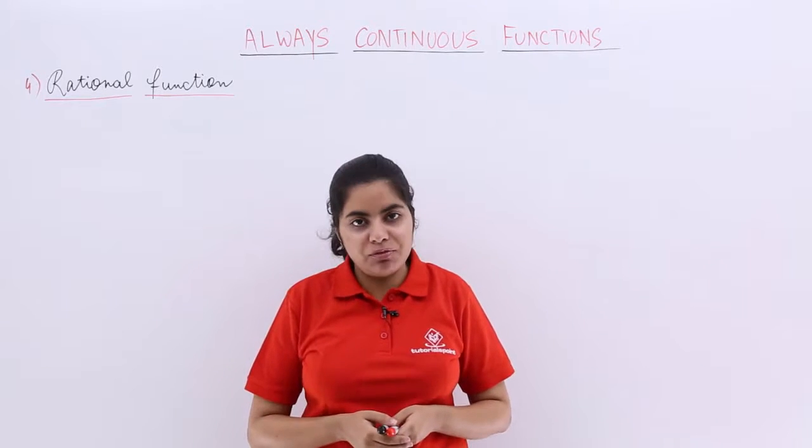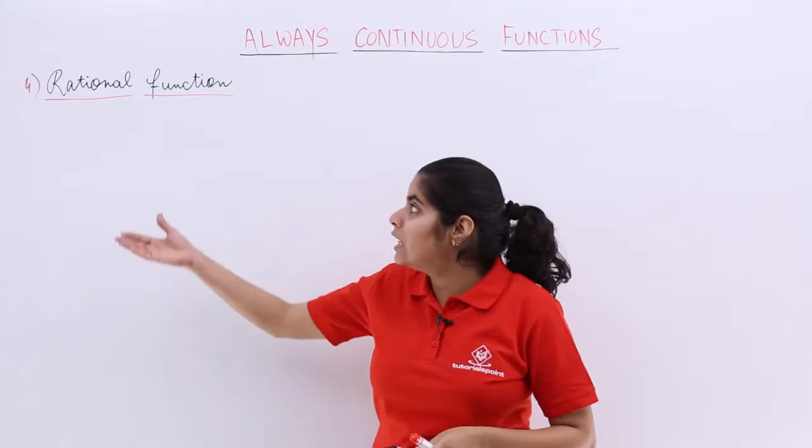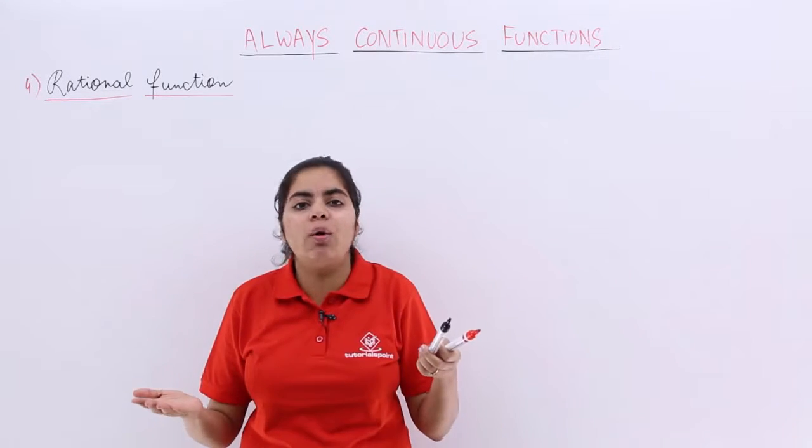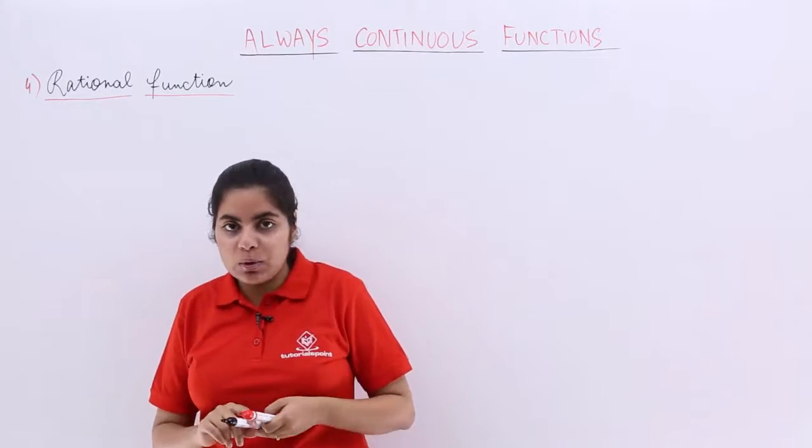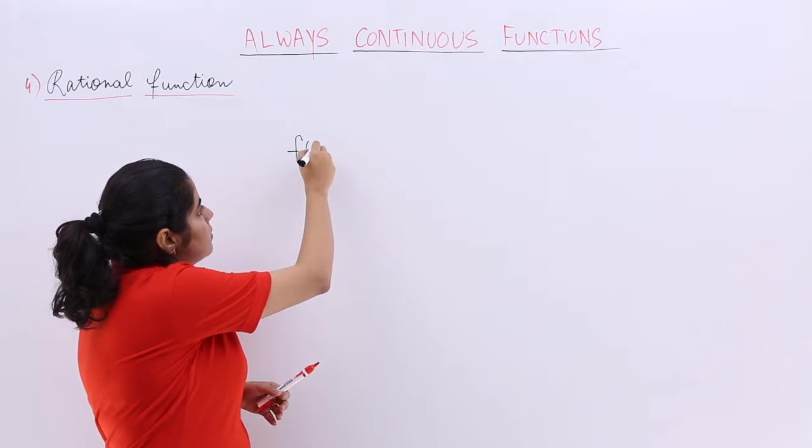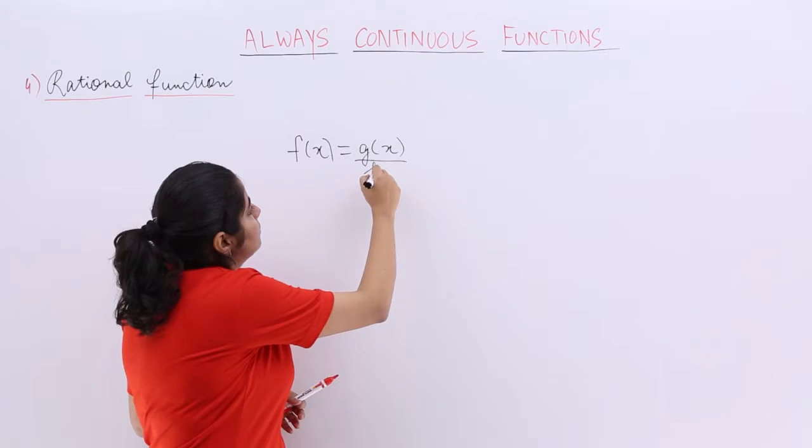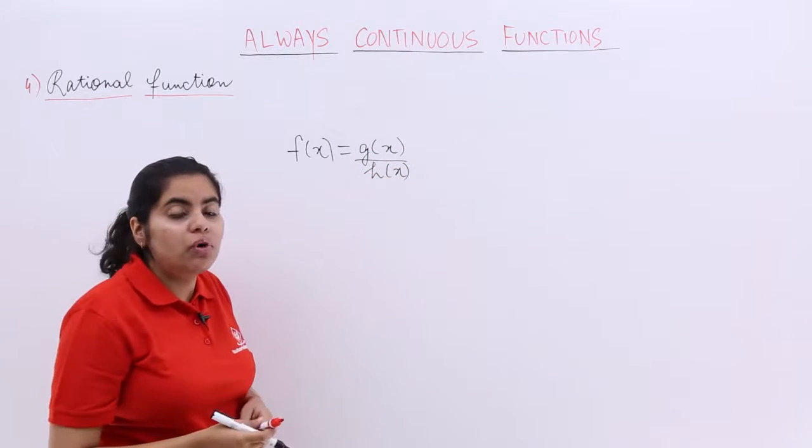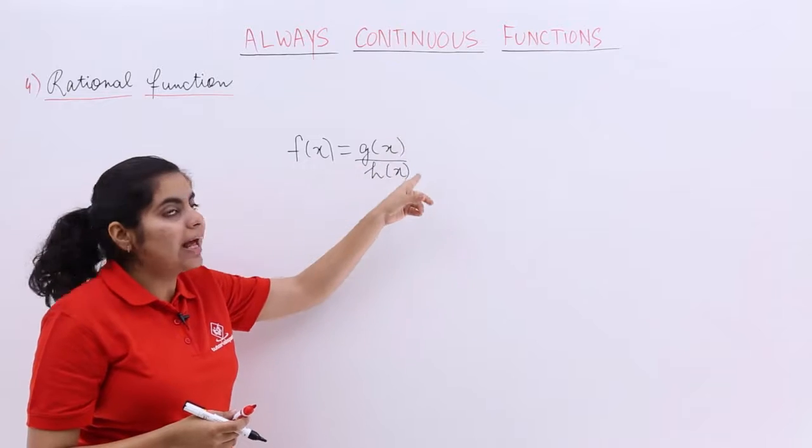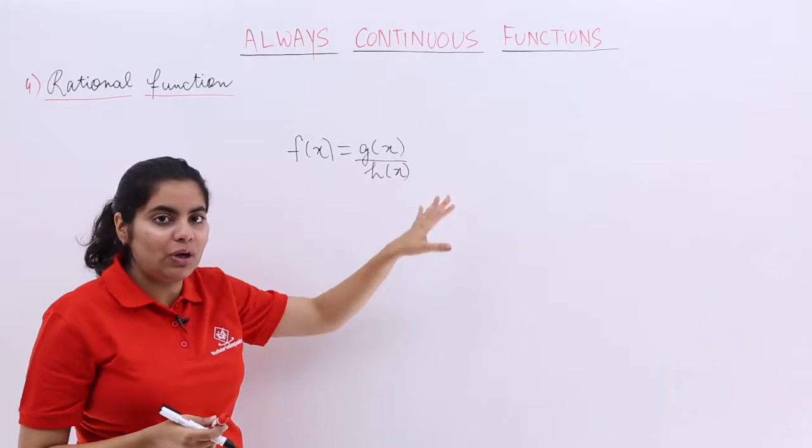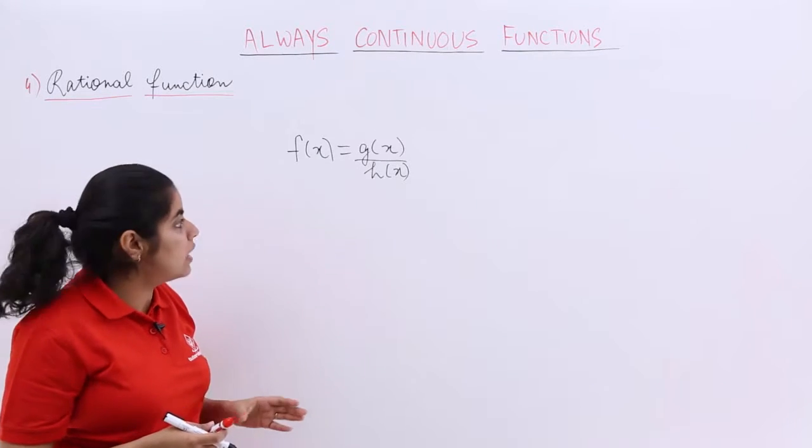Now, what is a rational function? As the name suggests, it takes into account the numerator and denominator concept. Suppose I have a function, say f(x), and that is g(x) upon h(x). What category is it? It is a rational function because it is in g(x) upon h(x) form, numerator upon denominator form.